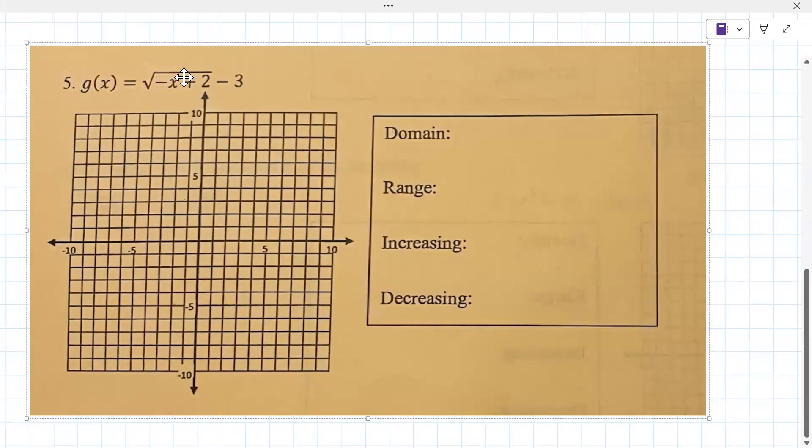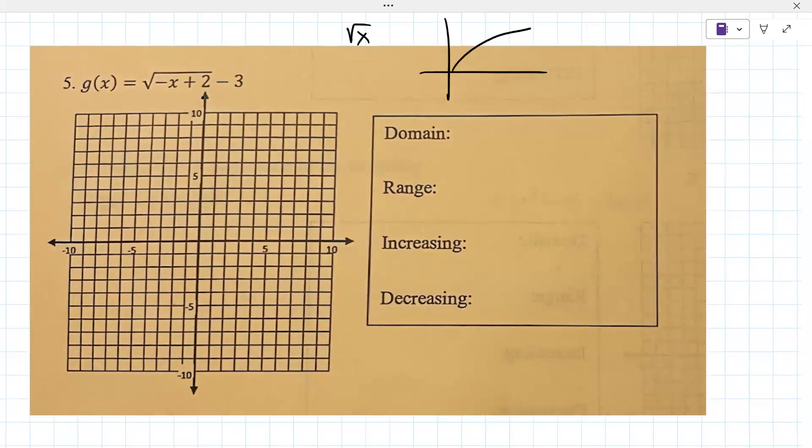So this one again, just completely different than the others. You got a square root function. But this has a bunch of transformations. Are you allowed to use a graphing calculator on this? She said we could use Desmos, but like it won't be provided for the actual quiz. So you're not going to have a computer for the quiz. This is all by hand.